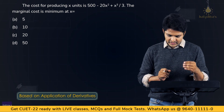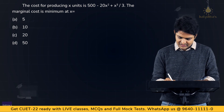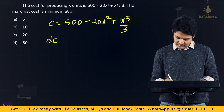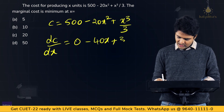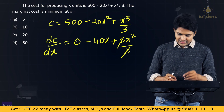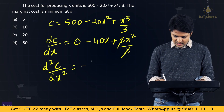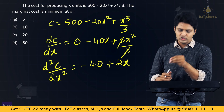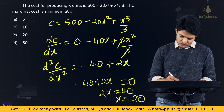Sample Question 3: The cost for producing x units is C = 500 − 20x² + x³/3. Find the value of x at which marginal cost is minimum. The first derivative dC/dx = −40x + x². For the minimum of marginal cost, set the second derivative d²C/dx² = 0: −40 + 2x = 0, giving x = 20, which is option C.